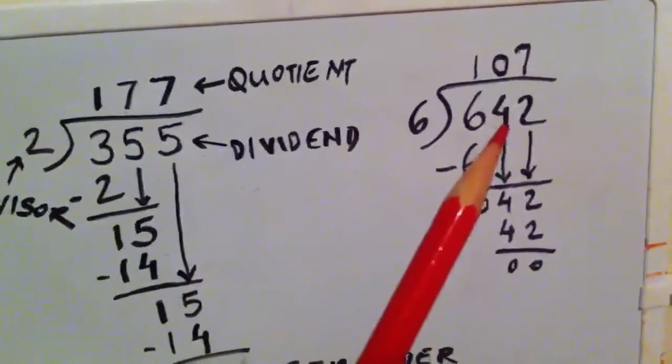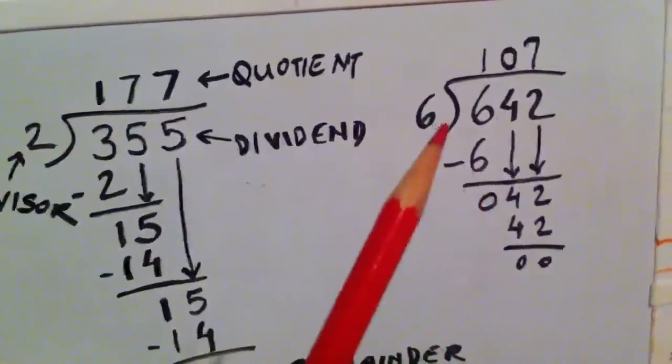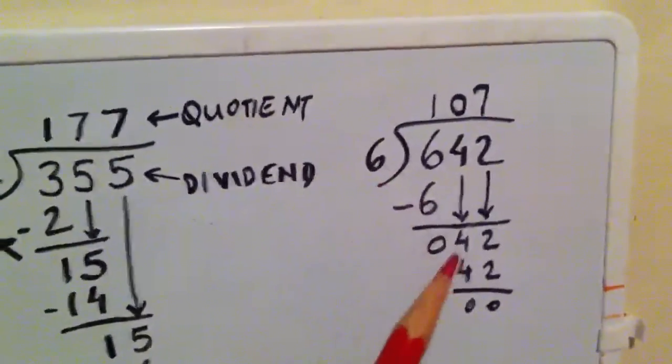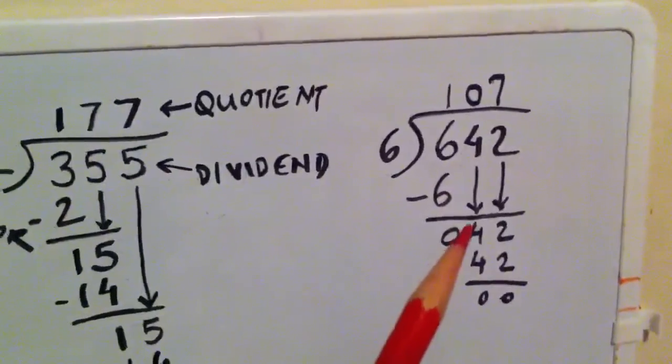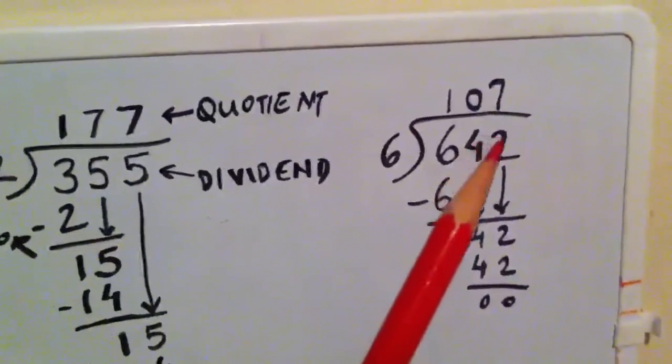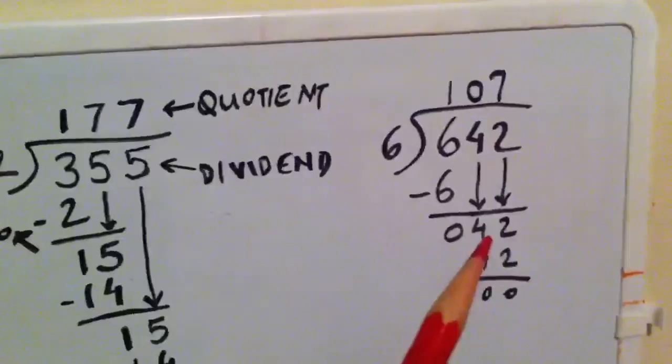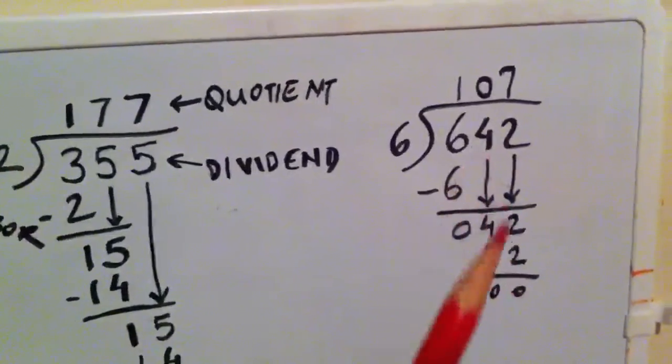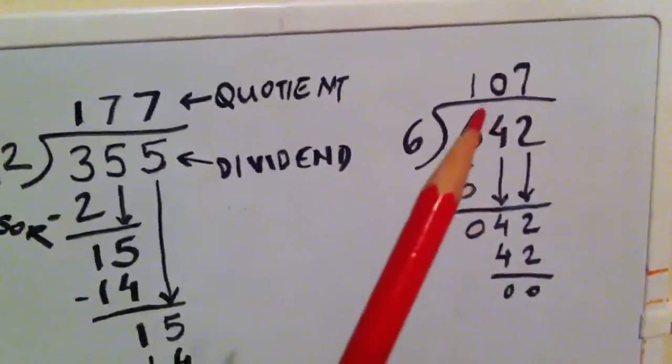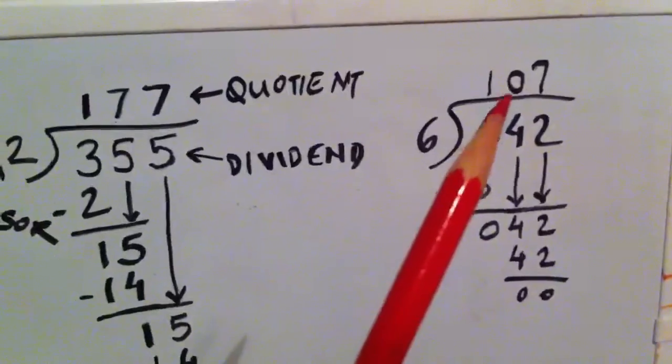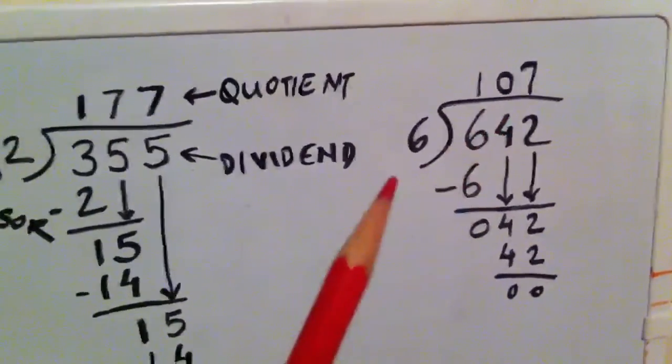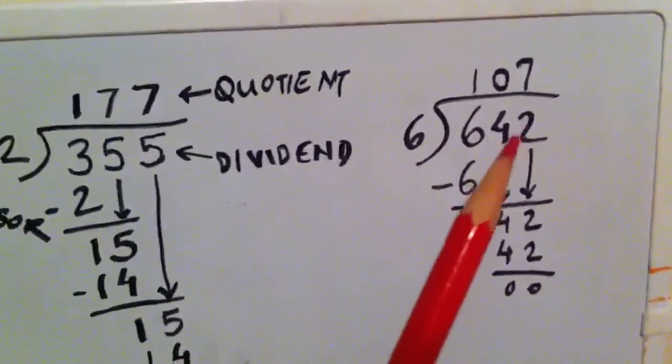Now the next digit we bring down is 4, but when you see the six times table, we don't get a 4. So what do we do? We bring the next digit down here. So when we bring two digits down, we place a 0 in the quotient.